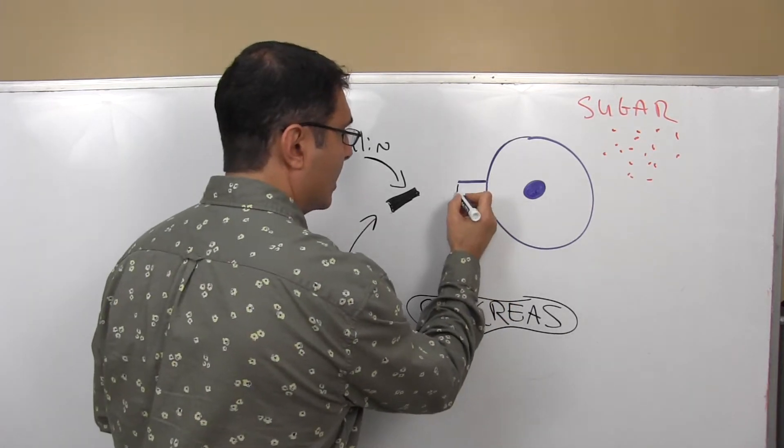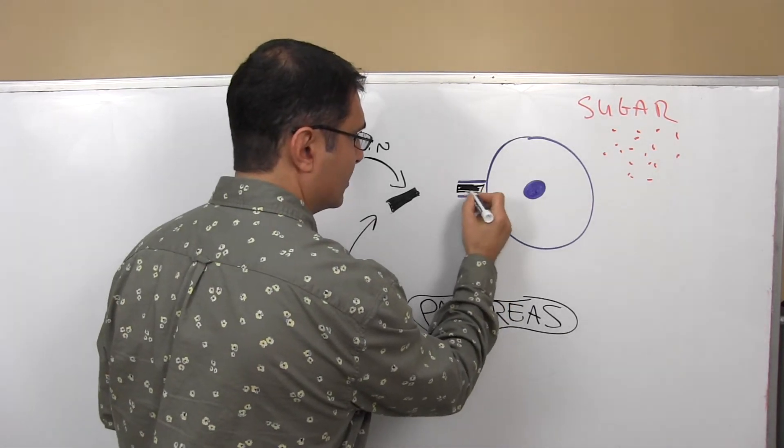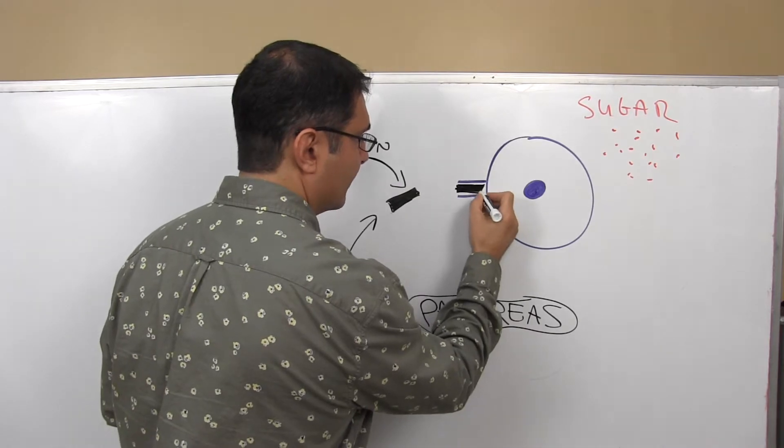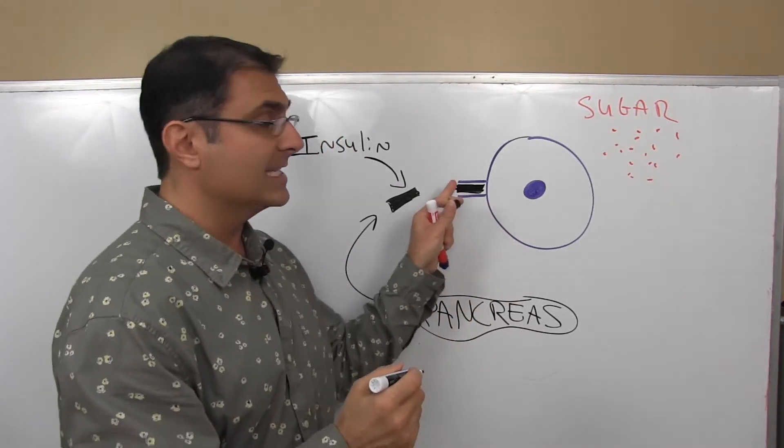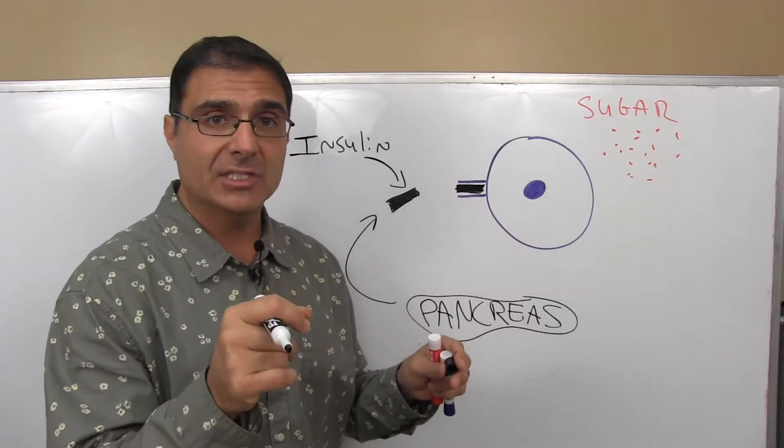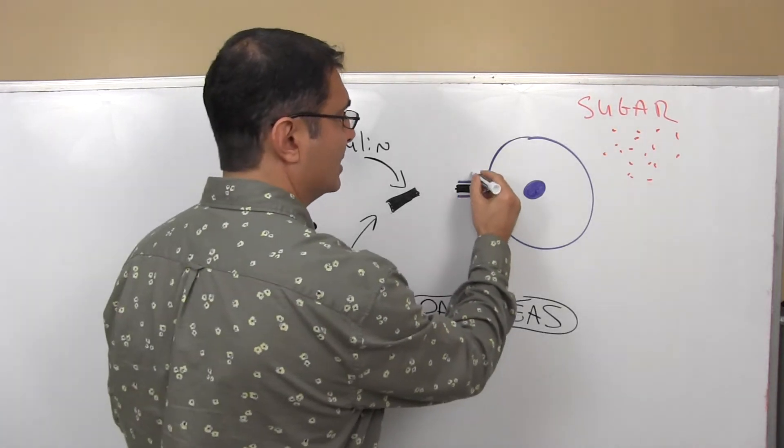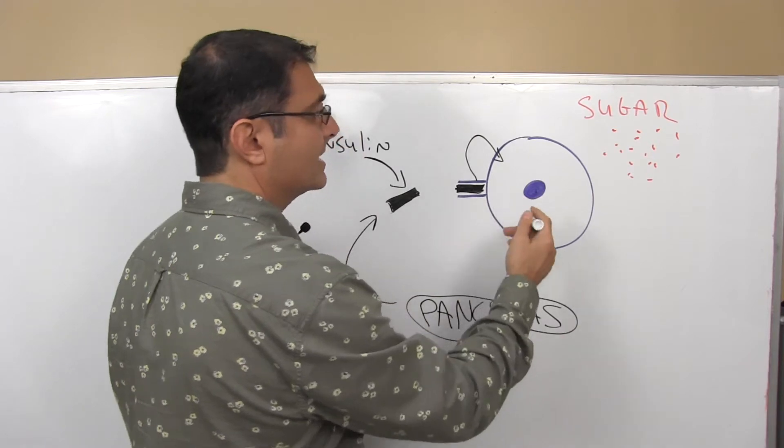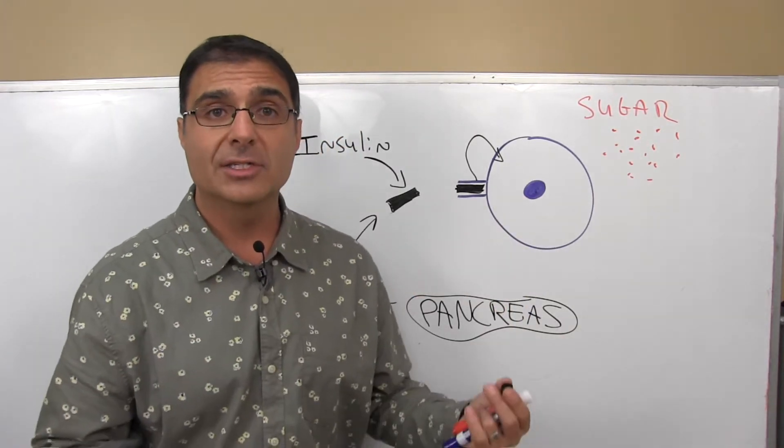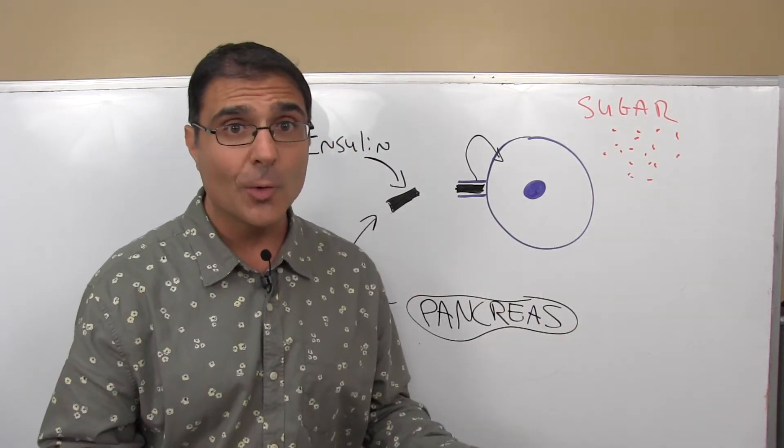We have a whole bunch of different receptors that line the surface of our cells. The insulin fits in that receptor much like a key fits into a lock. And when the insulin gets into that receptor, it gives a message to the cell that says, absorb the blood sugar. We don't want to go into a coma.